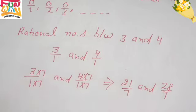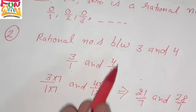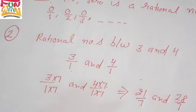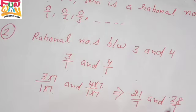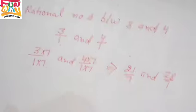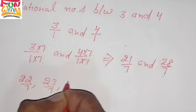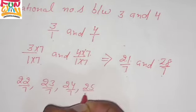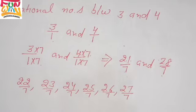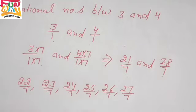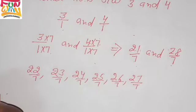So between 21 over 7 and 28 over 7, the numbers are: 22 over 7, 23 over 7, 24 over 7, 25 over 7, 26 over 7, 27 over 7. I have found 6 numbers. If you want to find more numbers, you can multiply by a larger number. This is question number 2.